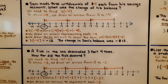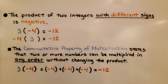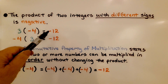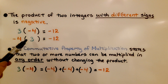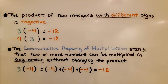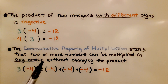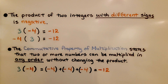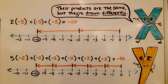We need the correct number of arrows above our number line. The product of two integers with different signs is negative. If we have positive three times negative four, that's equal to negative twelve. And if we have negative four times positive three, that's also equal to negative twelve. We have different signs, so our product is negative. The commutative property of multiplication states that two or more numbers can be multiplied in any order without changing the product.